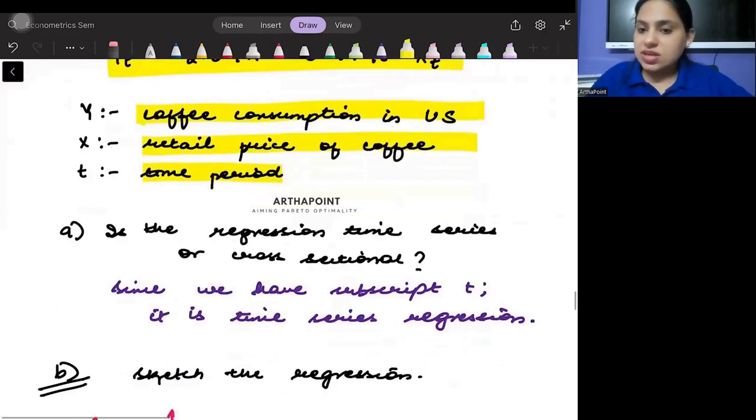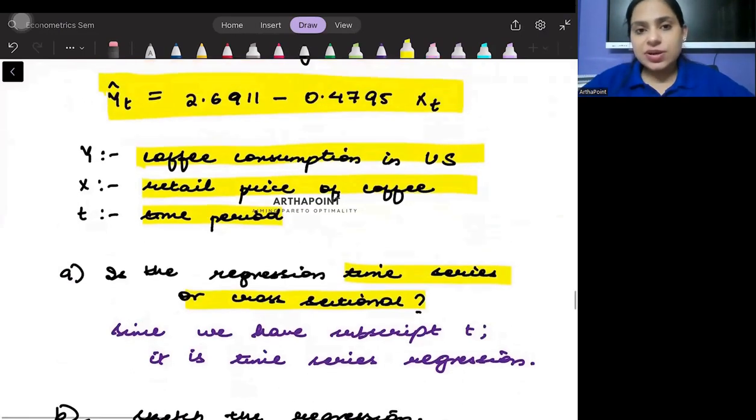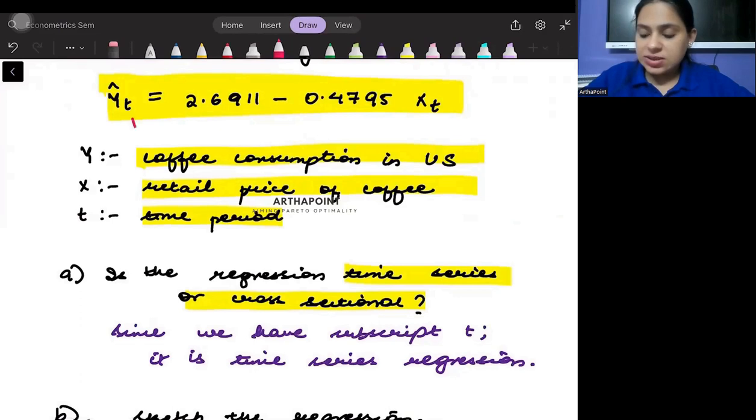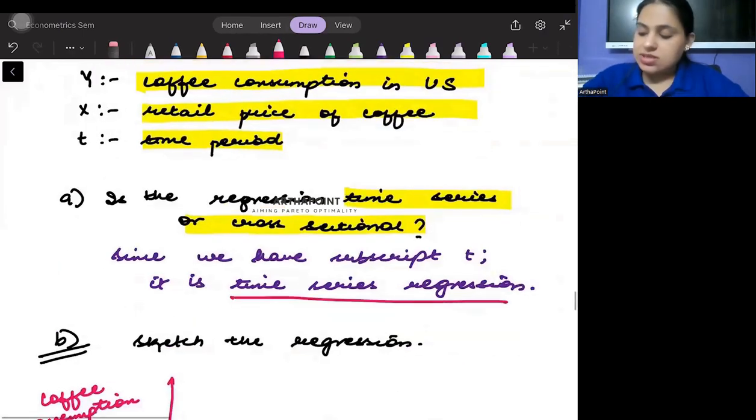The first question is: is this regression equation time series or cross-sectional? As you can clearly see, there is this subscript t here, and t itself means this goes across time periods - time period 1, time period 2, time period 3, and so on. The data is fixed; it's about coffee consumption in the US, in one country. So when you have one data point going across different time periods, it is clearly a time series dataset.